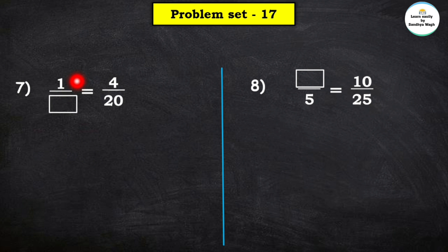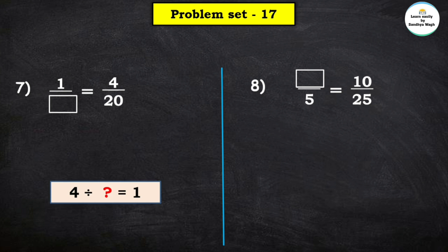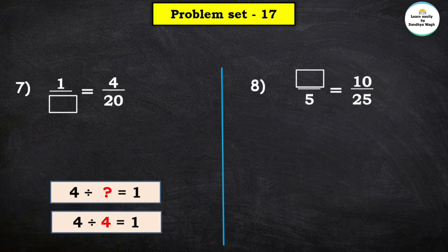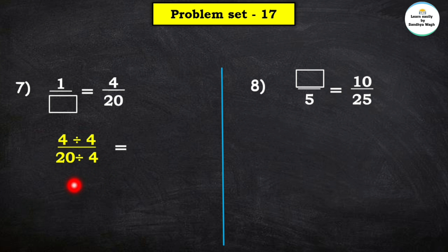Next: the numerator is 1 and the denominator is missing, equal to 4 upon 20. Since 1 is smaller than 4, we use division. 4 divided by which number equals 1? 4 divided by 4 equals 1. So we divide both numerator 4 and denominator 20 by 4: 4 ones are 4 and 4 fives are 20. Therefore 1 upon 5 is the equivalent fraction of 4 upon 20.